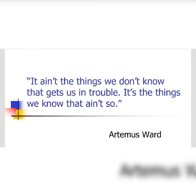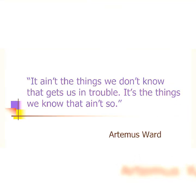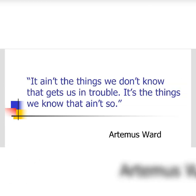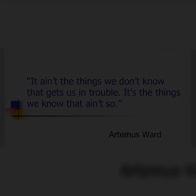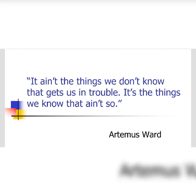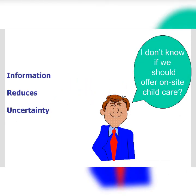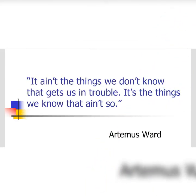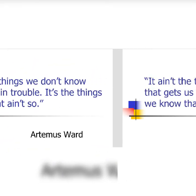For example, someone may not know whether they should offer on-site childcare or introduce a new program. The real problem is not what we don't know — if we don't know something, we won't make a decision about it. The real problem is when someone believes that what they think is right. If you make a decision based on information that is not totally correct, it will create problems for you.